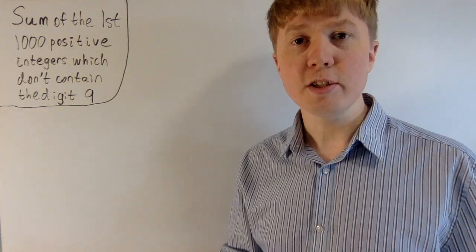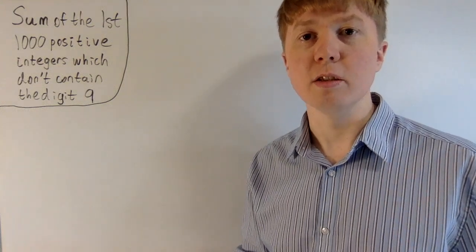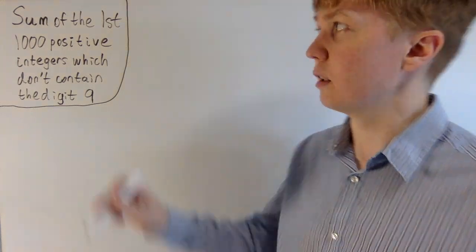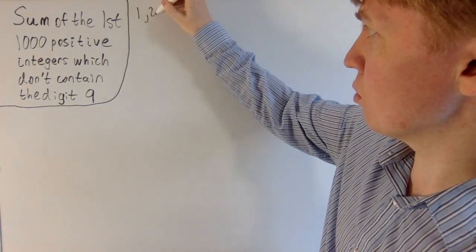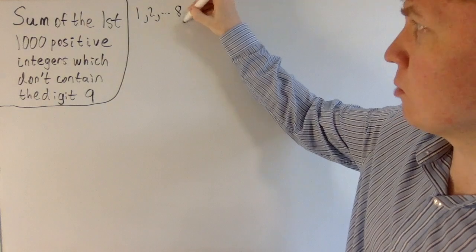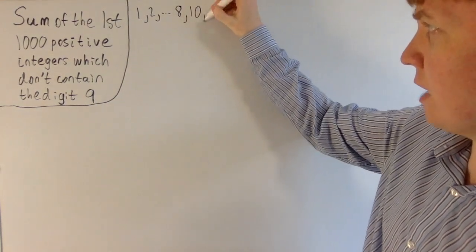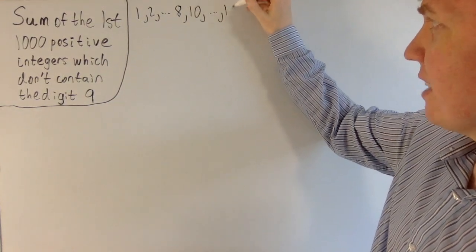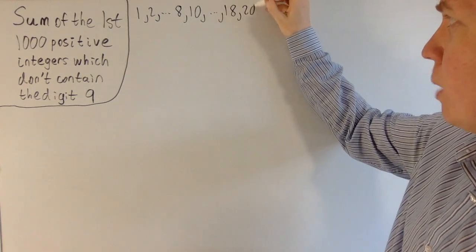We're going to look at this problem of finding the sum of the first thousand positive integers which don't contain a digit 9. So we start off with 1, 2, 3, all the way up to 8, then we don't include 9, so we add 10, 11, and so on, up to 18, we skip 19, we include 20.